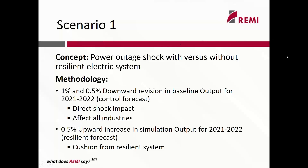I will run two forecasts here. In scenario one, we have a power outage shock with versus without the resilient electric system. The methodology is to run a control forecast and a resilient forecast. In the control forecast, I assume a 1% decrease in baseline output for 2021 and a 0.5% decrease for 2022, affecting all industries. For the resilient forecast, I assume a 0.5% increase in simulation output — a bounce back from the baseline because we have a resilient electric system. The difference of these two forecasts shows the economic impacts of having a resilient electric system.